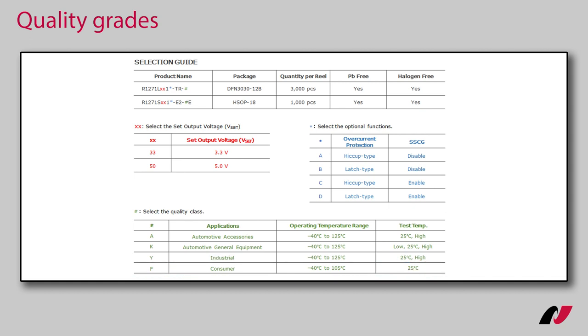However, some applications even require a higher quality level. For example, products used in an industrial factory production line often have to run 24 hours a day or at a wide operating temperature range.